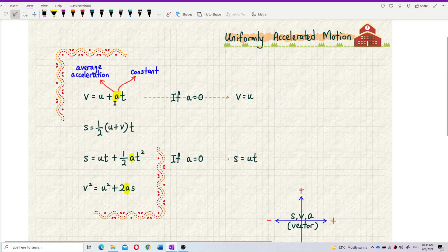And this acceleration here is actually average acceleration. Because if you rearrange your formula, because this V minus U equal to AT, so to find that A is V minus U over T. So you can find average acceleration from this formula.